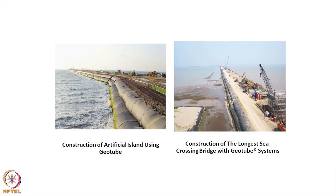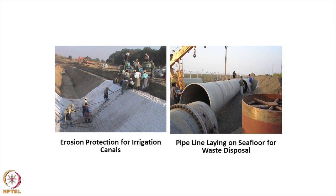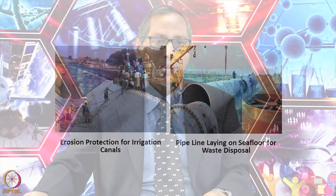Here is the construction of an artificial island using geotextile tube, and the construction of the longest sea crossing bridge with a geotextile tube system. Another application is erosion protection in irrigation canals — most of the time canals are lined with concrete, but over time cracks develop and seepage occurs. You can provide proper geomembrane material to protect the irrigation canal so there is no seepage and water can be controlled. This applies not only to canals, but also to earthen dams and reservoirs — the geomembrane material is an impermeable material.